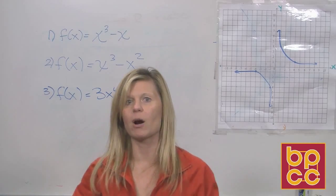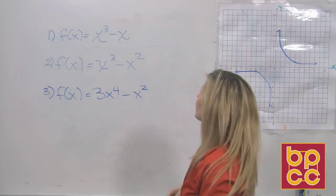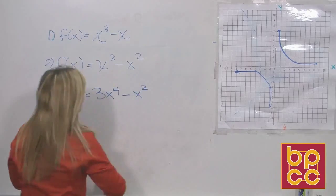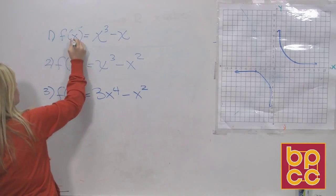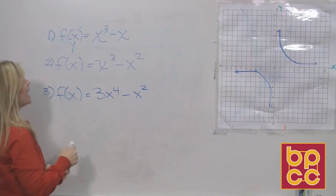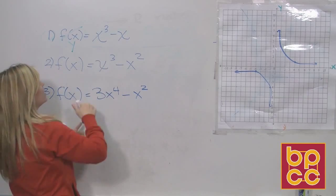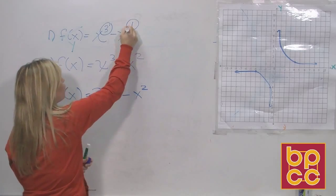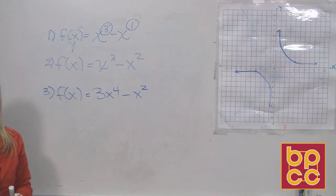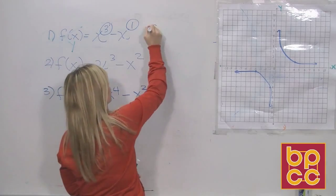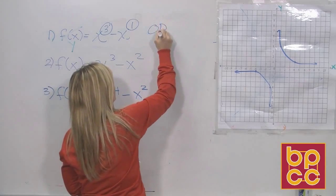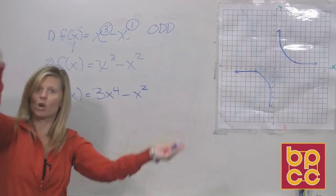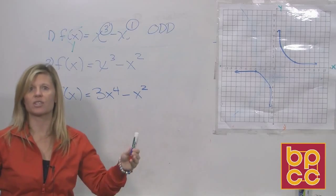If you look at our first equation - remember, f of x can always be replaced with y - look at the exponents: you have 3 and the invisible exponent of 1. Both exponents are odd, which means this function is odd. That means if I graphed a picture of it and turned it upside down, it would look the same.